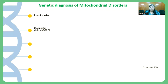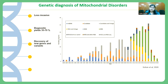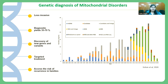Genetic diagnosis is a confirmatory and definitive approach for mitochondrial disorders. Its advantages include being less invasive, with diagnostic yields reported ranging from 35 to 70%. Genetic diagnosis also leads to the discovery of new genes and variants involved in mitochondrial disorders — as shown in the chart, after 2010 the increase in new genes discovered has been very steep. Additional advantages include enabling targeted treatment and helping assess the risk of recurrence in families, since knowing the gene involved reveals the inheritance pattern.